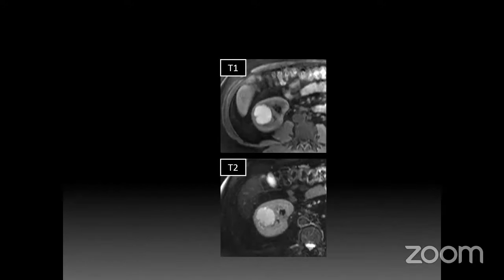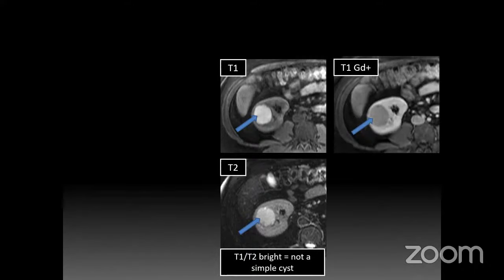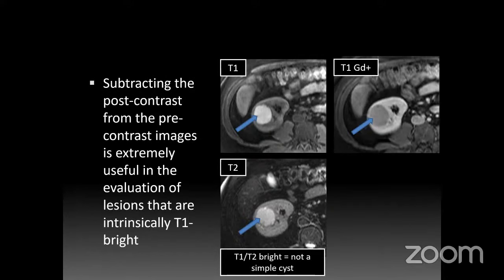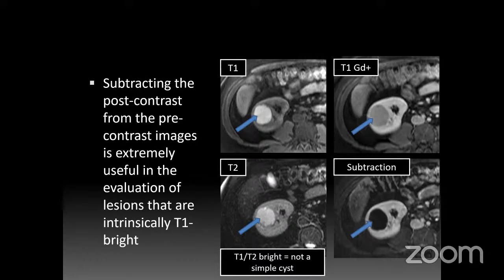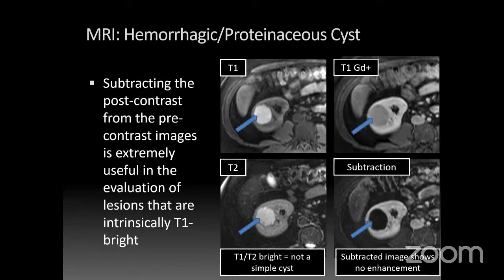What about a lesion that's bright on T1 — it should be dark for simple fluid — and on T2 it's not quite as bright as CSF, with slightly decreased signal? This doesn't look like a simple cyst. After gadolinium it's hard to say if it's enhancing or not, which is where subtraction images are key. We subtract post-contrast from pre-contrast, leaving only true enhancement. Anything bright on the subtraction image is enhancing; anything black is not. This lesion is completely dark on subtraction — not enhancing — so we can confidently call it a hemorrhagic or proteinaceous cyst.